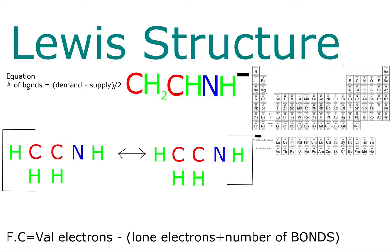Before we draw it, we should figure out how many bonds this molecule should contain. This is the formula I tend to use: Number of bonds equals demand minus supply all over two. Demand is how many electrons each atom likes to be surrounded by to have a noble gas configuration.